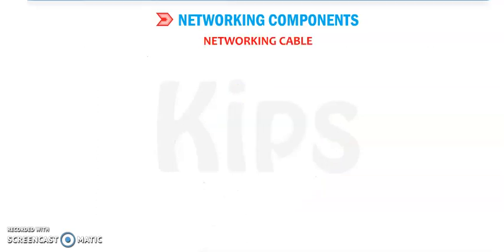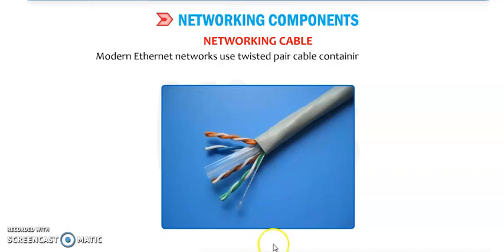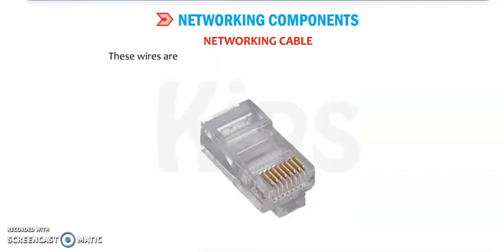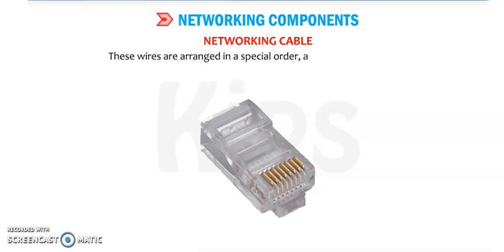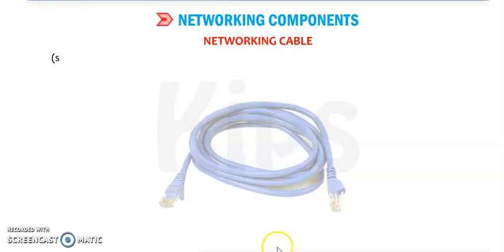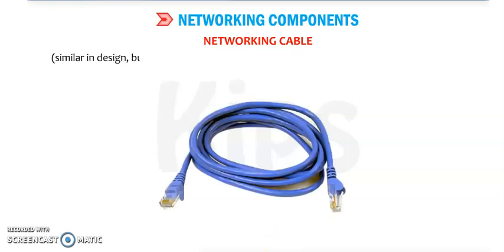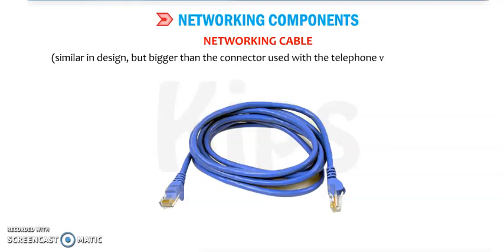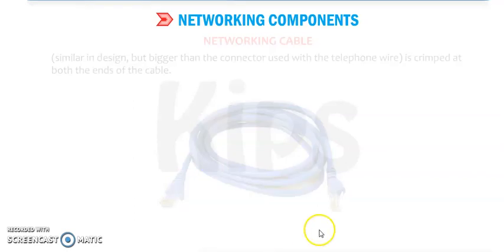Next is networking cable. Modern Ethernet networks use twisted pair cable containing wires arranged in a special order, with an RJ45 connector — similar in design but bigger than the connector used with telephone wire — crimped at both ends of the cable.